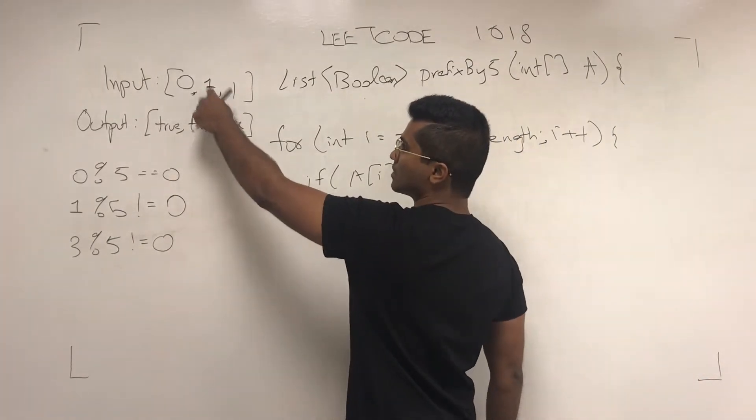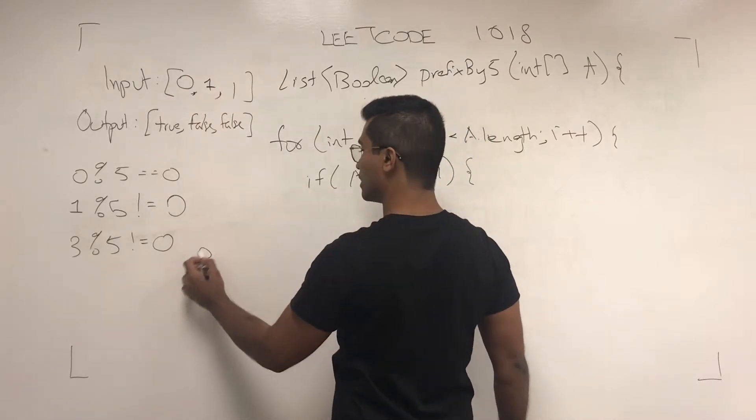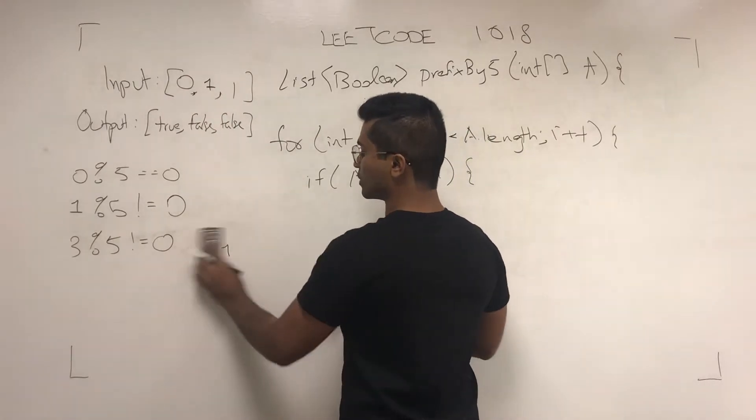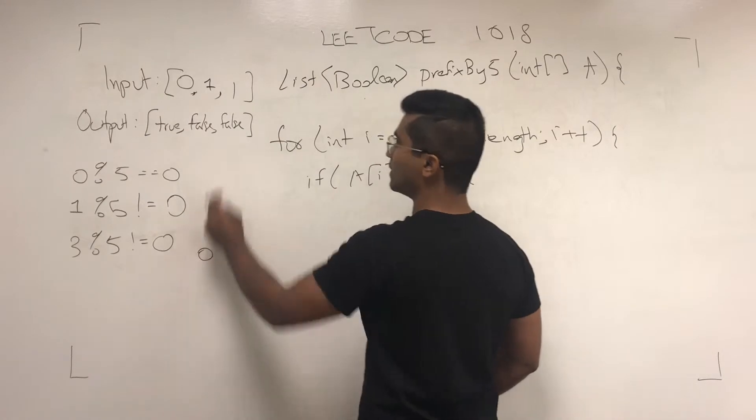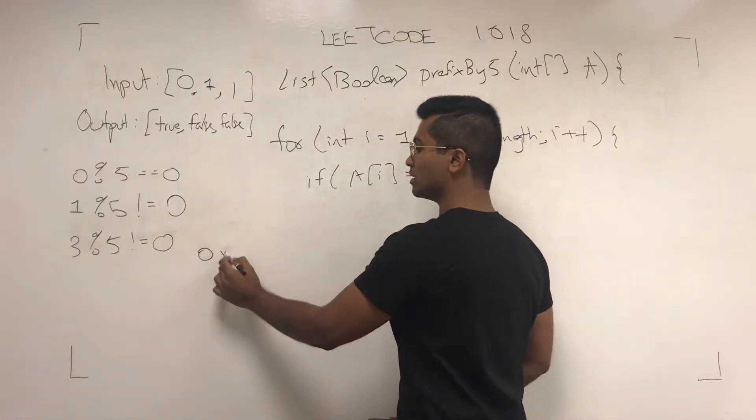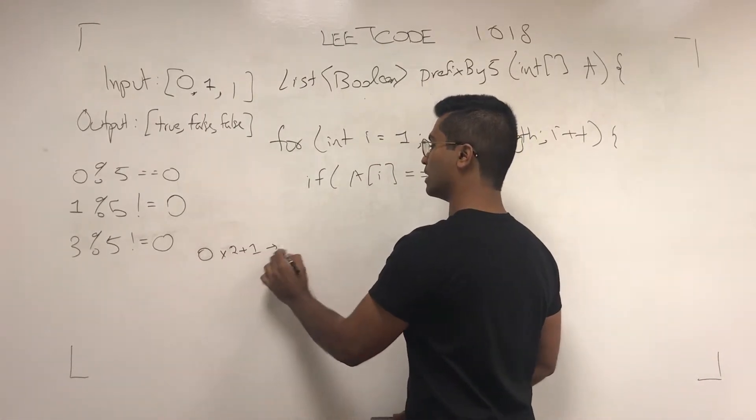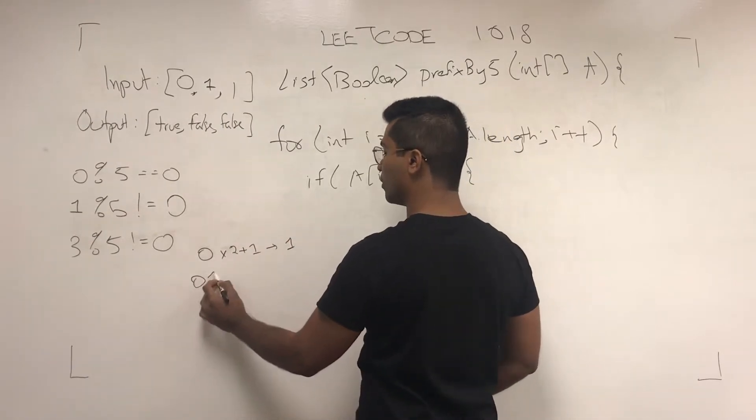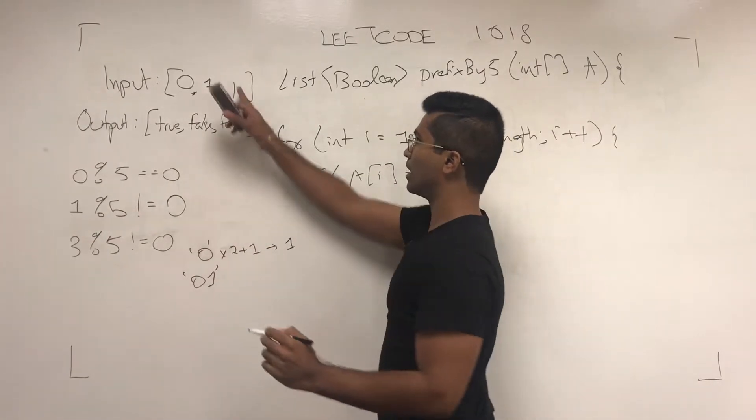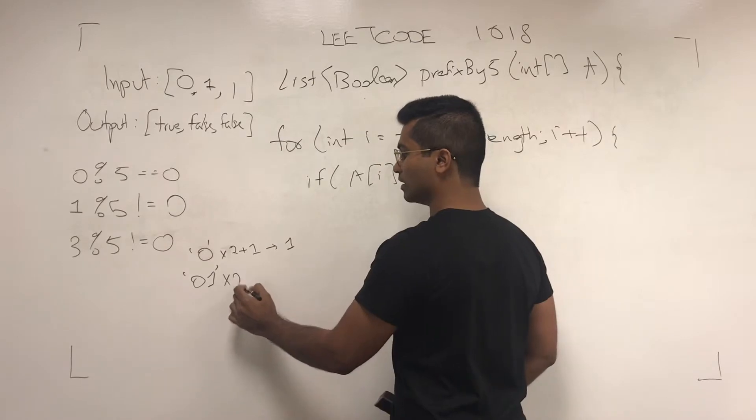For example, this, when we take 0 and 1, or sorry, when we take 0 and the next one is a 1, we multiply this by 2 and then we add 1, and we get 1. Now when we take 0 and 1 as a binary and we're adding another 1, we multiply this by 2 and add 1.